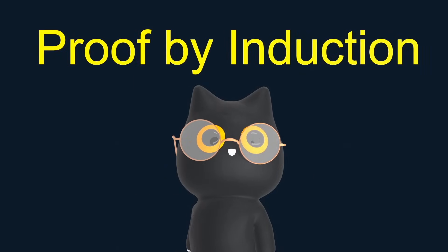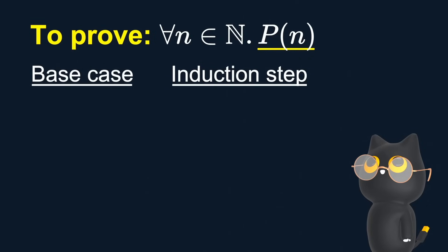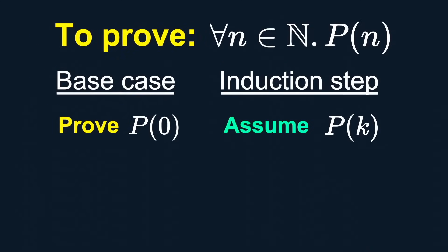There are two parts, the base case and the induction step. If we have to prove P(N), we first prove P is true for an initial value of N. Commonly, it is 0 or 1. Next comes the fancy part. We assume P is true for an arbitrary natural number k, which is called the induction hypothesis. We then try to prove P(k+1). This is the induction step. Combined, we have basically created a proof chain.